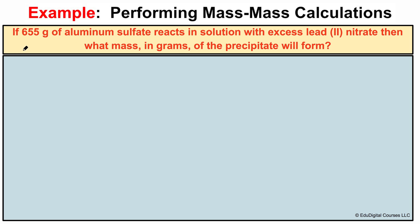In this example problem it says: if 655 grams of aluminum sulfate reacts in solution with excess lead two nitrate, then what mass in grams of the precipitate will form? We have a chemical reaction taking place in solution and we're asked to determine the mass in grams of the precipitate that will form.